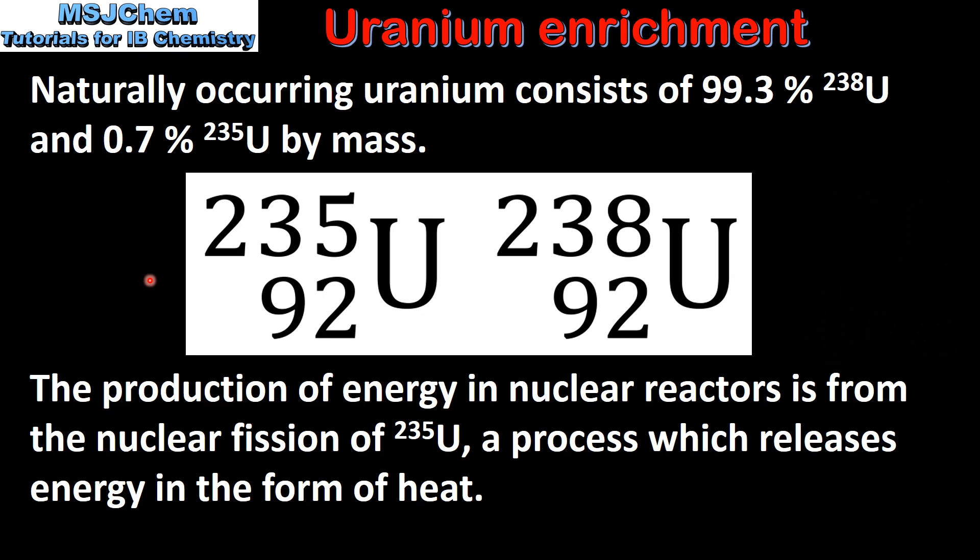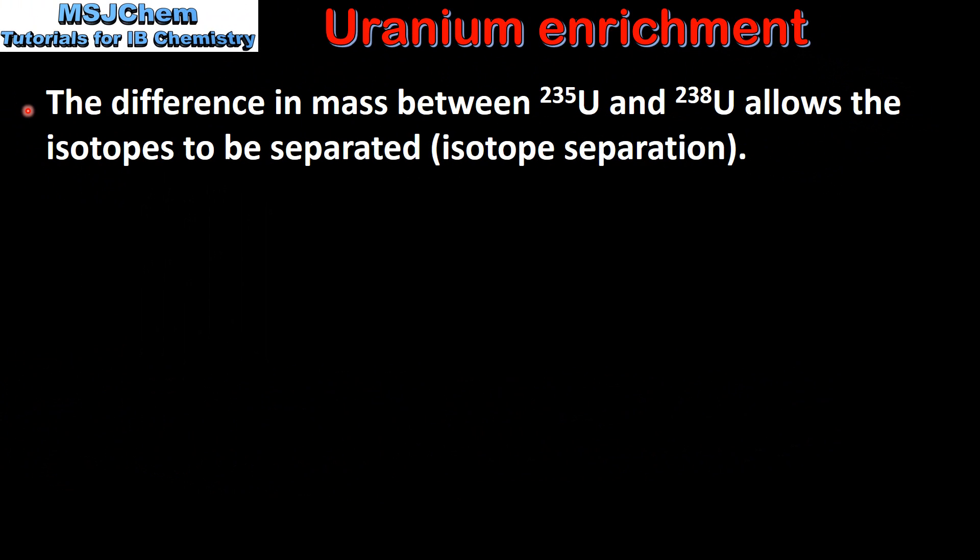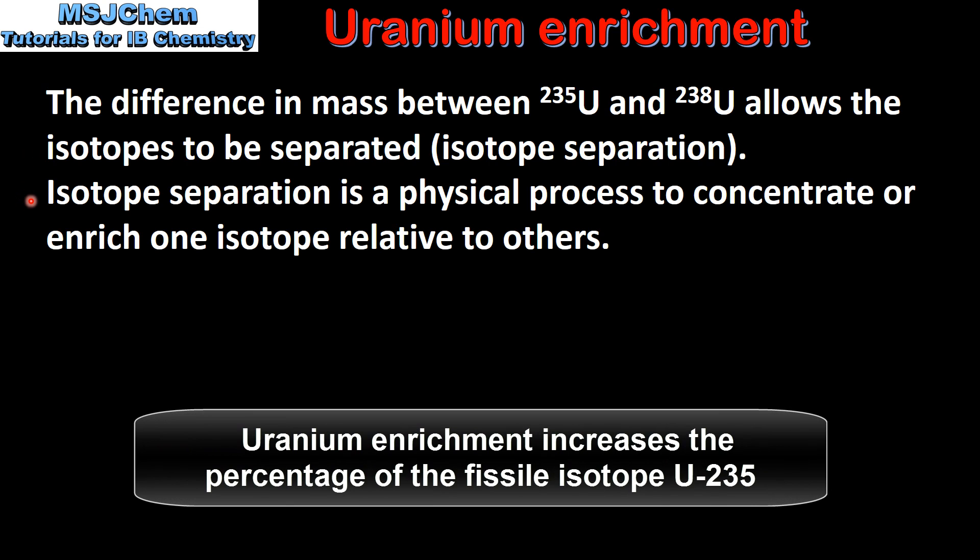Enriched uranium is a type of uranium with a percentage of the lighter isotope has been increased. The difference in mass between uranium-235 and uranium-238 allows the isotopes to be separated which is known as isotope separation. Isotope separation is a physical process to concentrate or enrich one isotope relative to others.